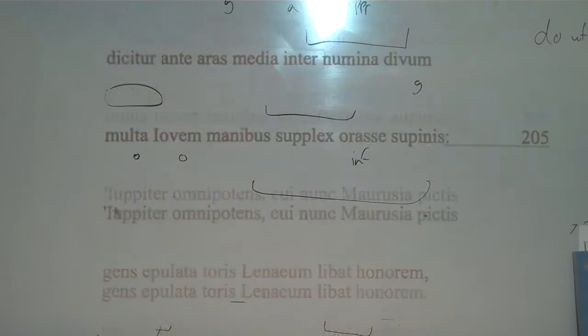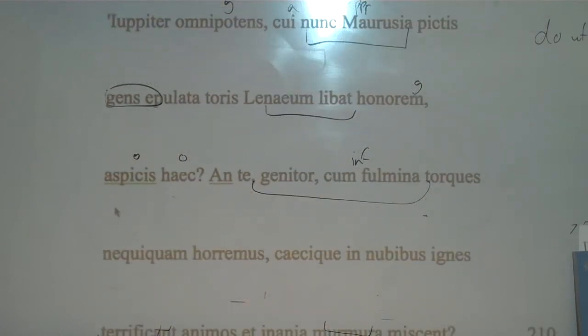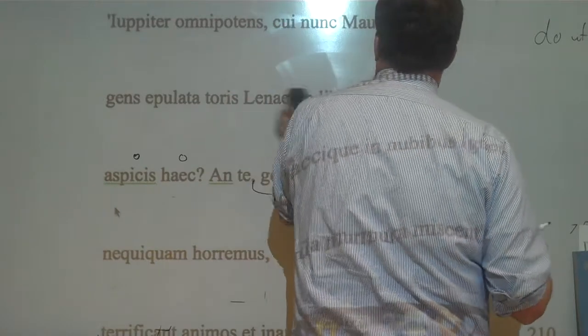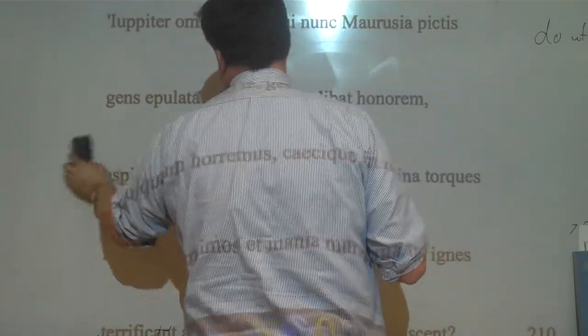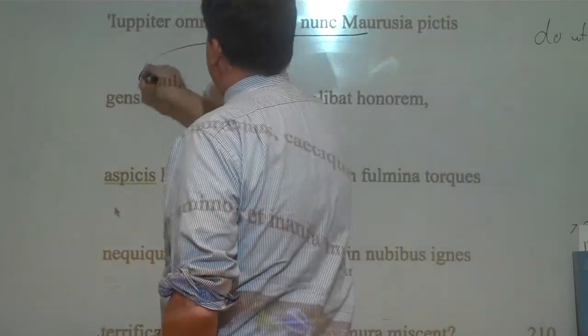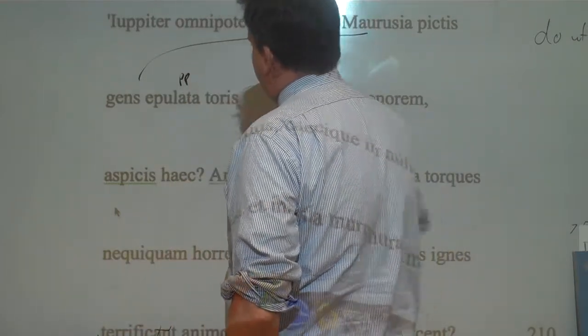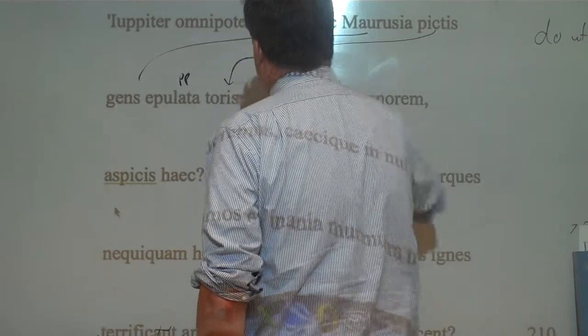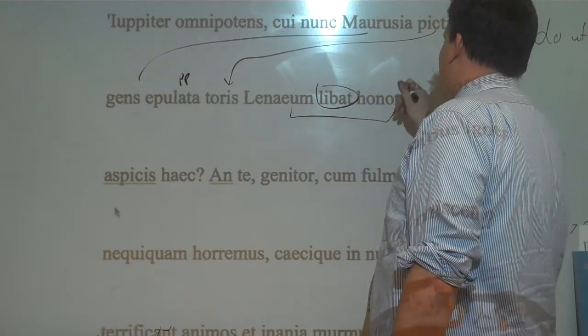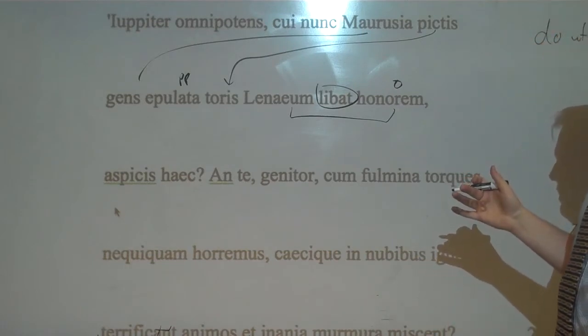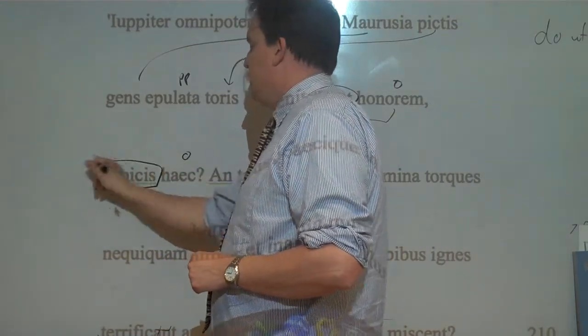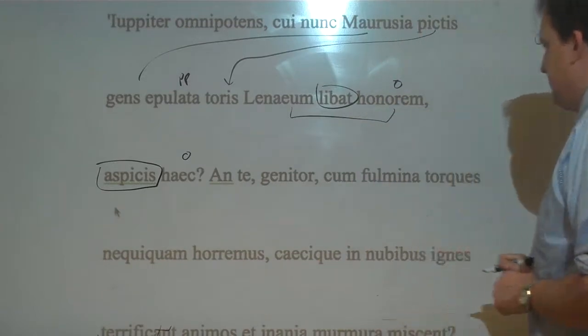And he says, Jupiter omnipotence, all-powerful Jupiter. Jupiter, qui noc mauricia, all-powerful Jupiter, to whom the Maurizian people, having feasted, this is a perfect participle compound, having feasted on painted couches, pours libations, or pours, like pours, linaeum honor. So Jupiter, so they do all these things for you, these festivals for you. Auspicus haec, do you see these things?